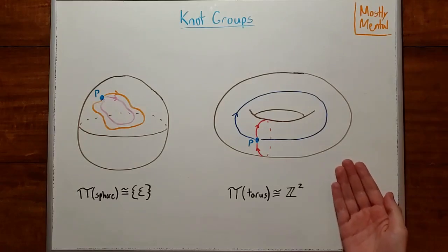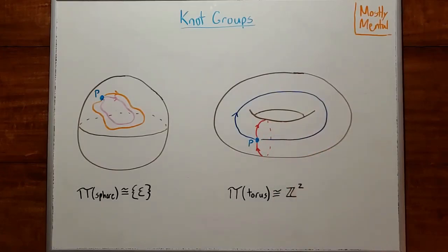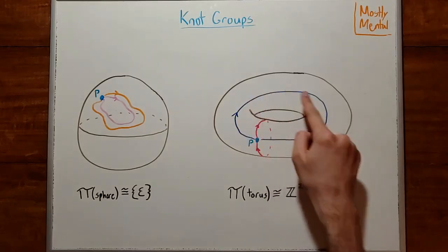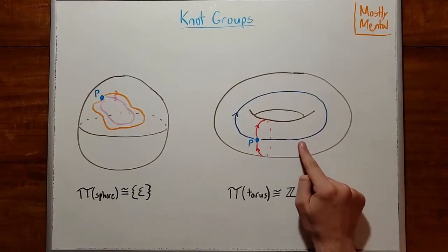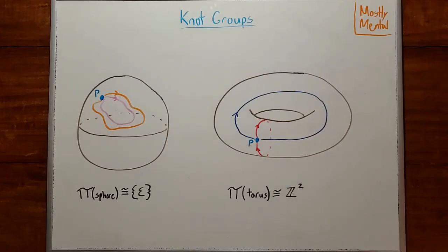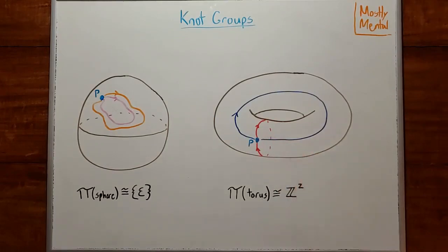Okay, then how about the torus? Well, we could go through the hole in the middle, and it turns out there's no way to shrink this loop down without coming off the surface of the torus. Or we could also go around the hole. And again, there's no way to shrink this loop down to a point either. And it turns out we can't transform this loop into this one. So we have two fundamentally distinct loops. And with some care, you can prove that every loop on a torus is equivalent to some number of these, plus some number of these. That is, the fundamental group is isomorphic to the pairs of integers Z squared. So the fundamental group for the sphere is trivial, and the fundamental group for the torus is Z squared. And those are different groups. Which means the sphere and the torus have to be topologically different.